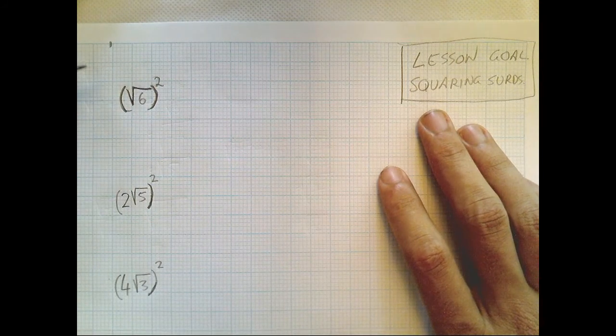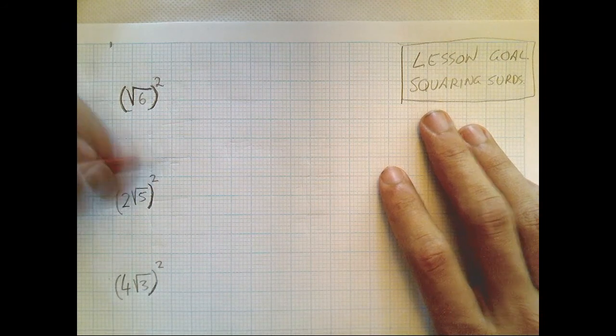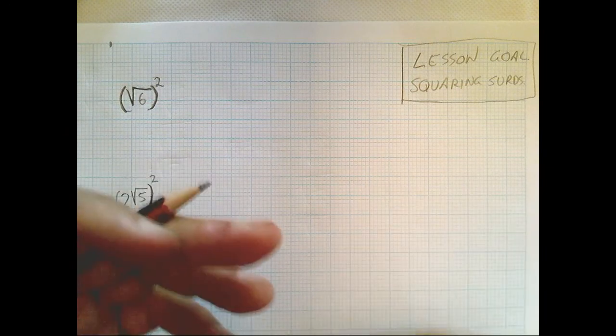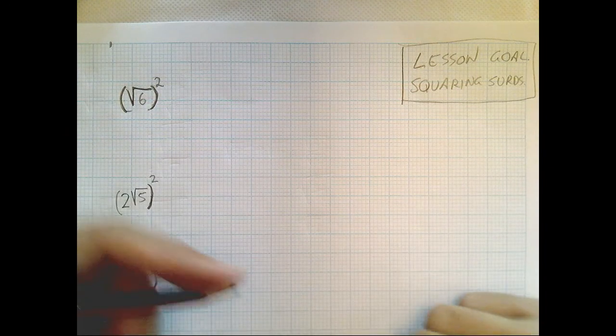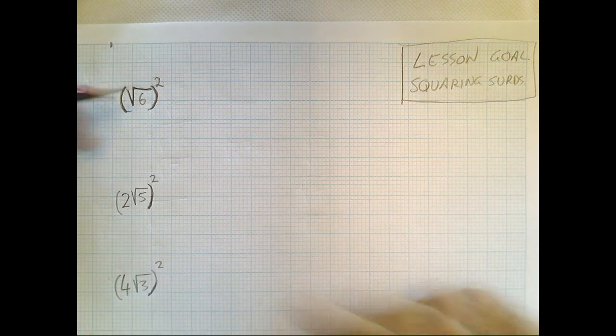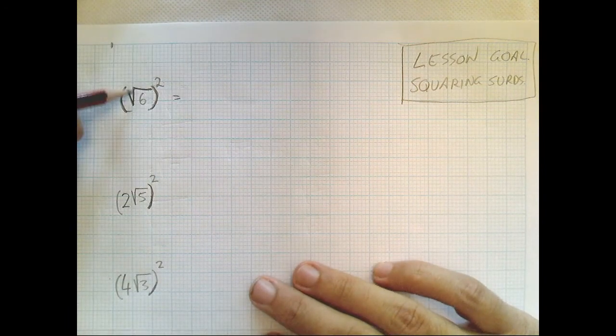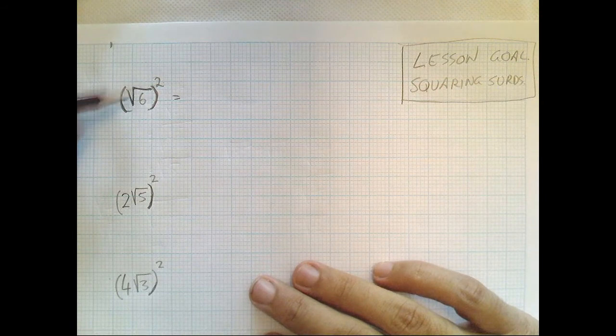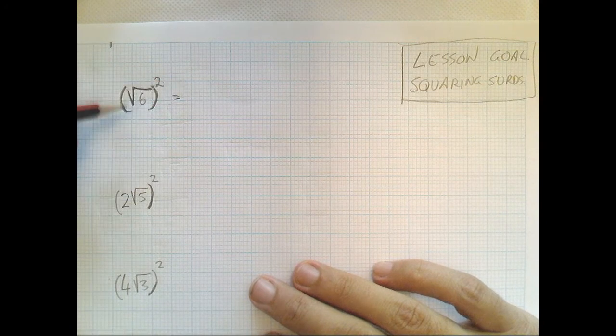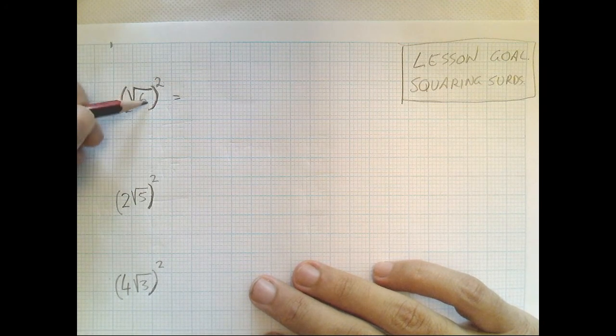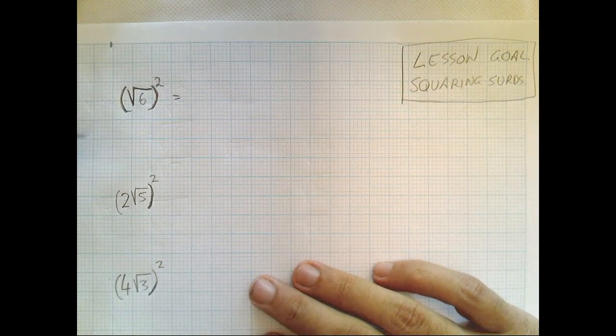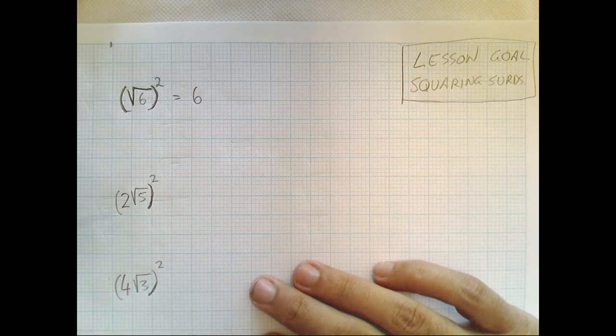Now, square root and squared are opposites. They're the same as plus and minus. They're opposites of each other. And multiply and divide are opposites of each other. Square and square root are opposites of each other. So if you square a square root, what you're essentially doing is getting rid of it. So the square of the square root of six, or the square root of six squared, is equal to just plain old six.